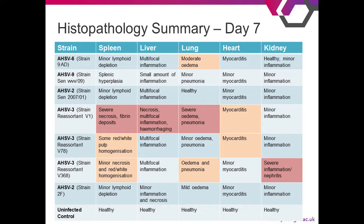This table summarises the histopathological findings. You can see in red that the AHSV-3 v1 strain has the most severe histopathological lesions, but there are severe lesions distributed across the other groups as well.